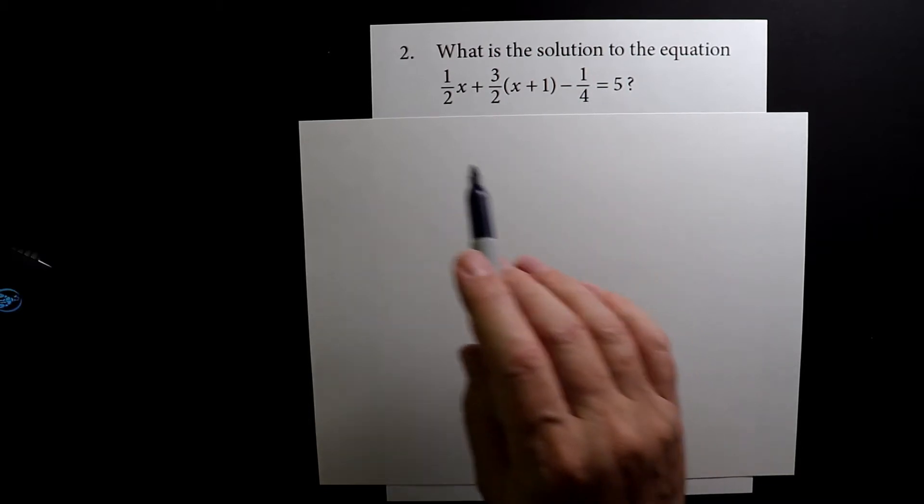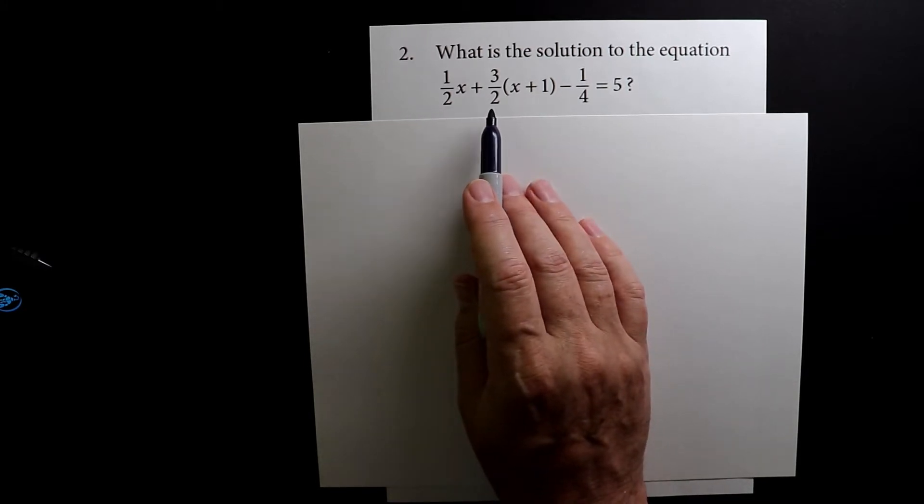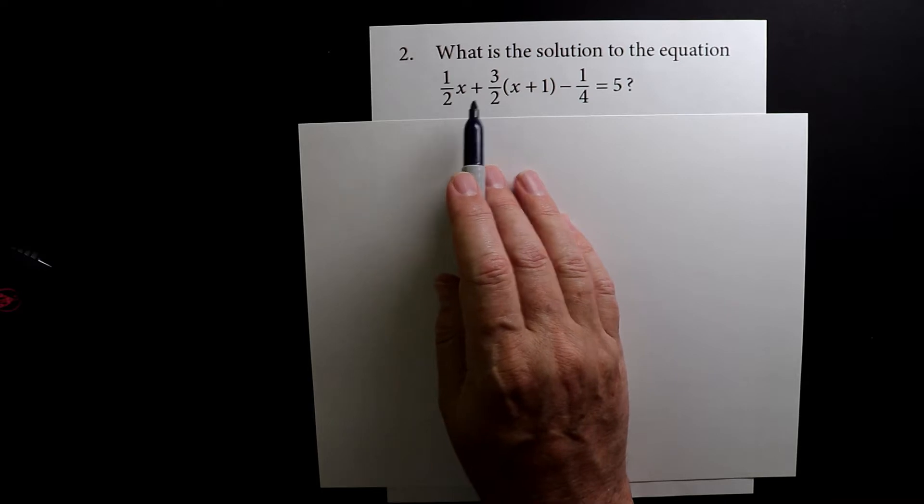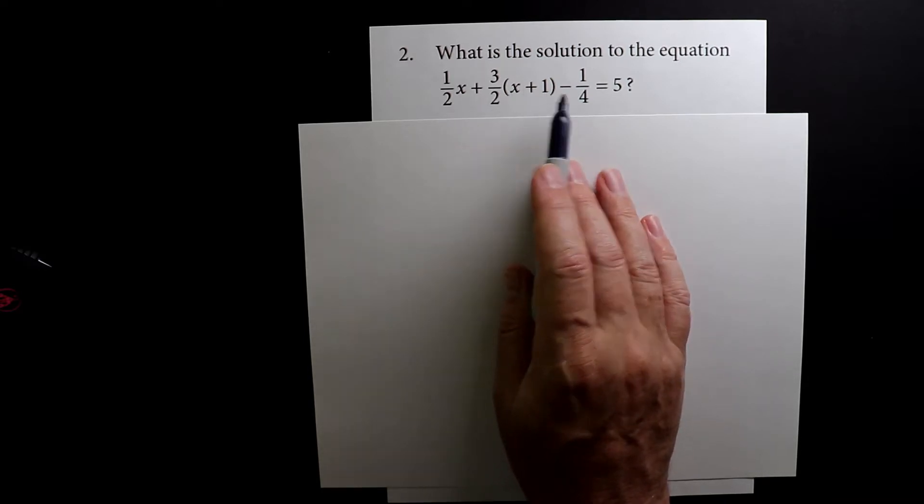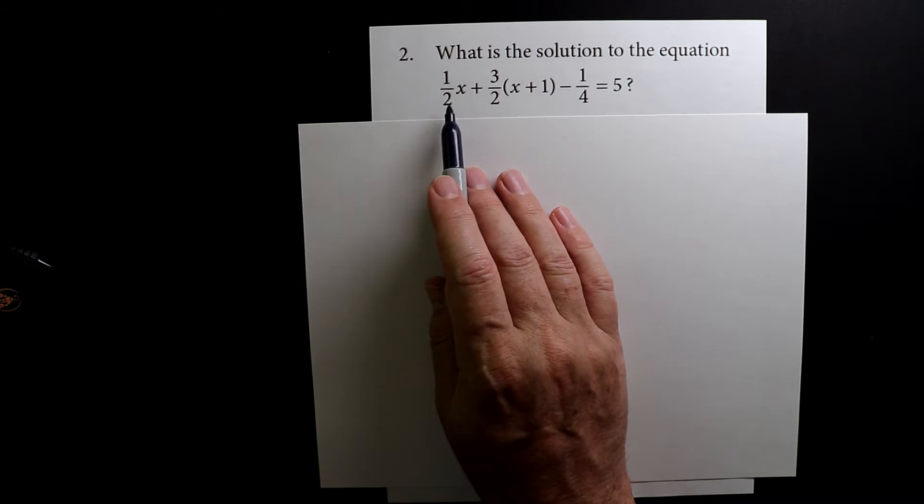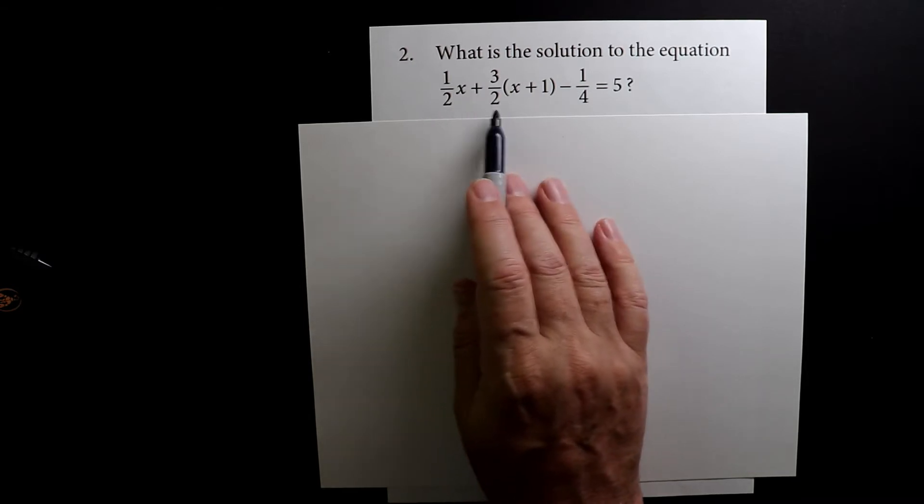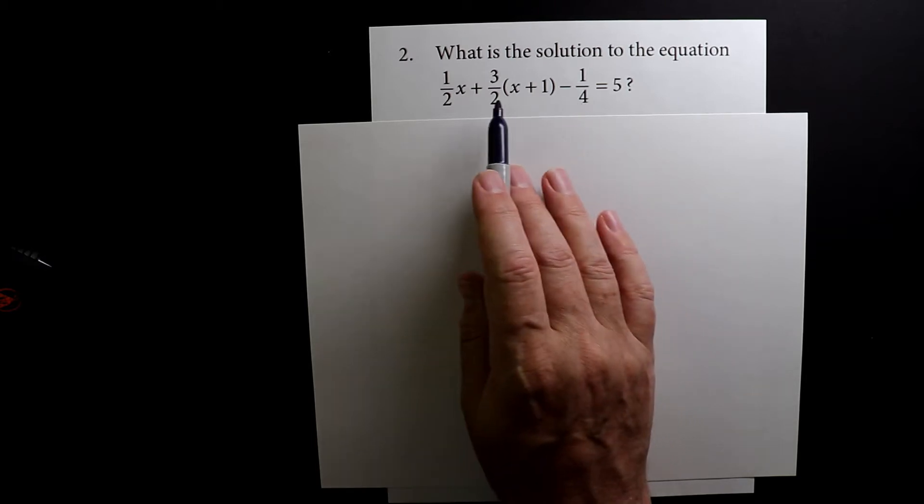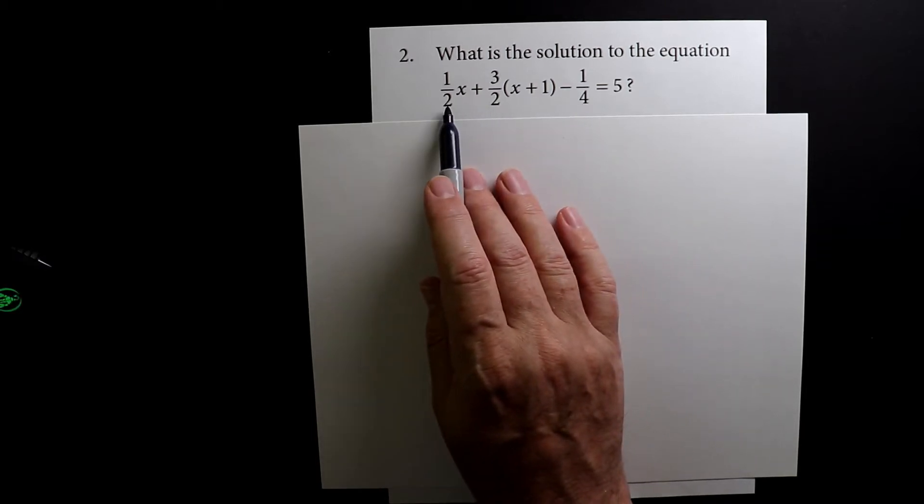So what we need to do is we have to look at these fractions. The first thing that we have to remember is that when we're adding or subtracting fractions, the denominator, the number on the bottom, has to be the same. So we have twos here, which are the same, but this one here equals four. So the first thing I want to do is turn this and this into a four.